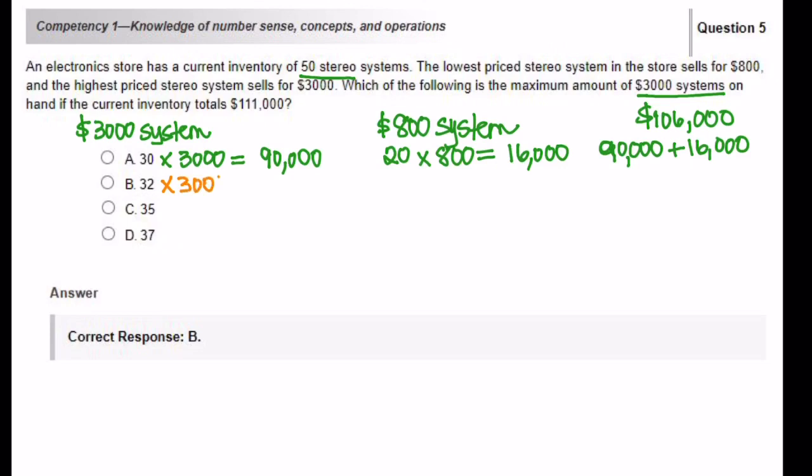Let's look at answer choice B. 32 times $3,000 is $96,000. If there are 32 of the $3,000 system, then there are 18 of the $800 system. 18 times $800 would get us $14,400. Now let's put the two systems together. $96,000 plus $14,400 would get us $110,400.